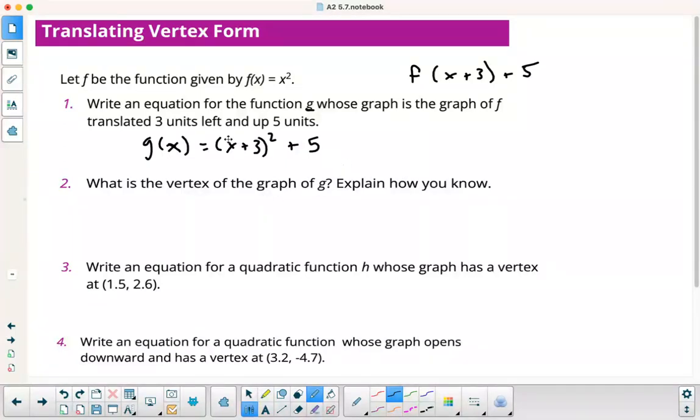Where's your vertex? If this is x squared, it would be a parabola centered at the origin. If I move this thing left 3 up 5, my vertex is going to be right there at negative 3, 5. How do I know that? I know that because I shifted left 3 and up 5, so my vertex goes from 0, 0 up there.